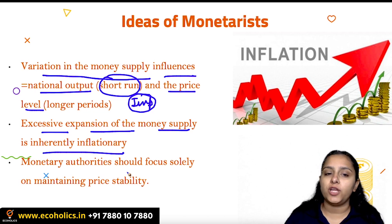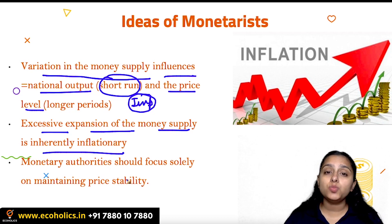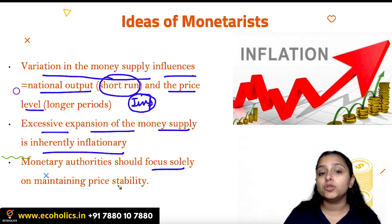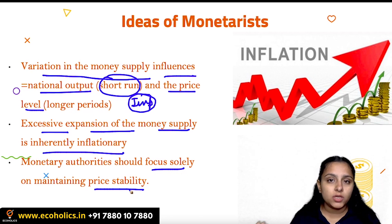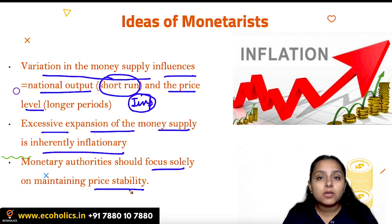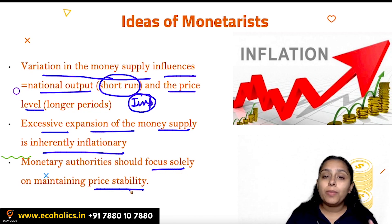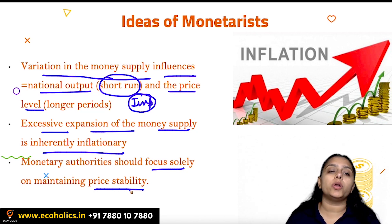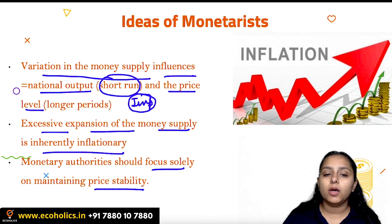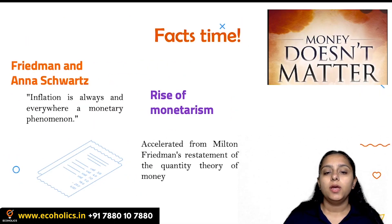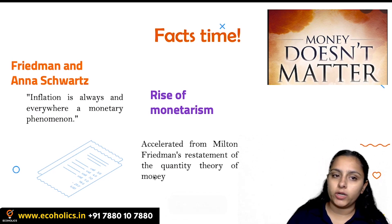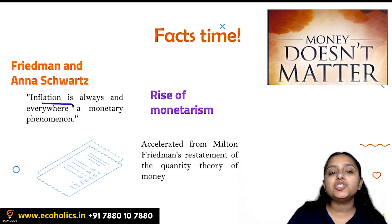Excessive expansion of money supply is inflationary, which is why the role of the central bank becomes more important. Their focus should be on maintaining price stability, because if they keep increasing money supply, the economy will fall into a cycle of inflation. Maintaining price stability is really important for monetary authorities — that's the core idea given by monetarists.